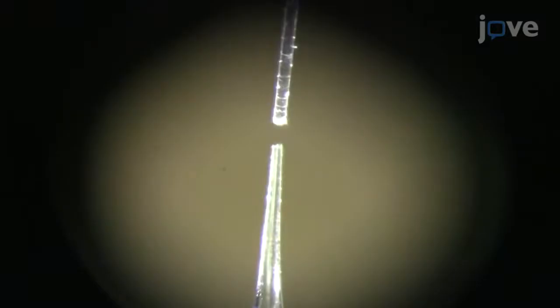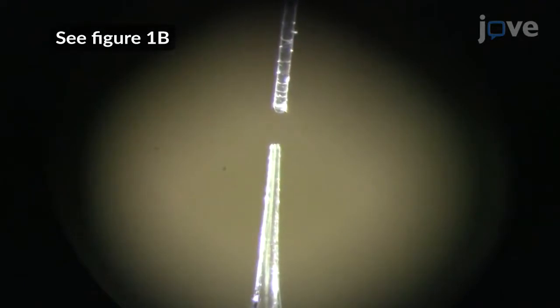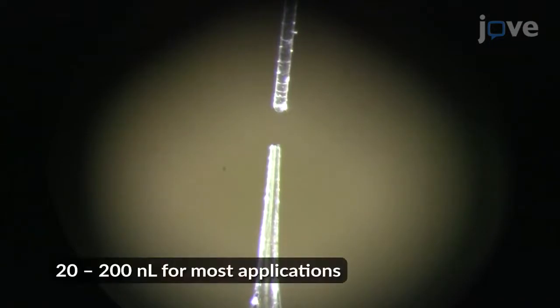Next, observe the bolus of silk AAV on the flat surface, which appears as a liquid dome that dries to a flat film within approximately one minute. Repeat the previous steps until the desired amount of silk AAV is deposited.